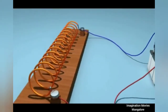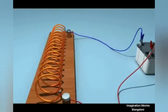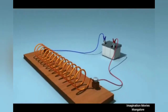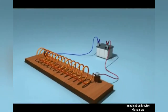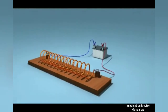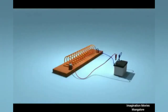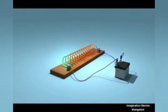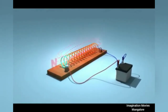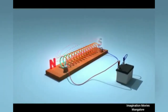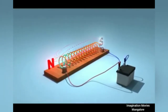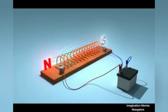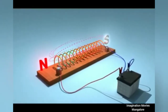The electromagnetic effect of a solenoid is used in several appliances. Let us pass electric current through the solenoid and observe the pattern of magnetic field lines demonstrated here.